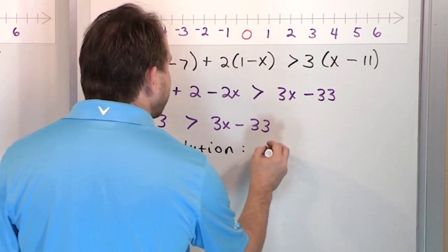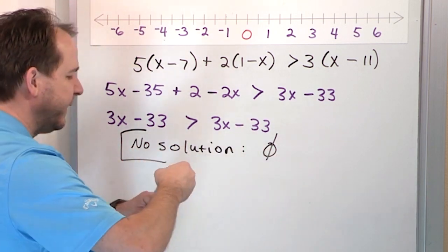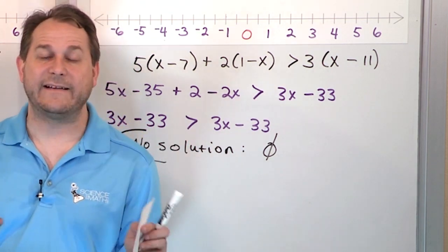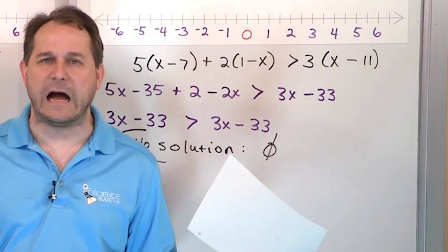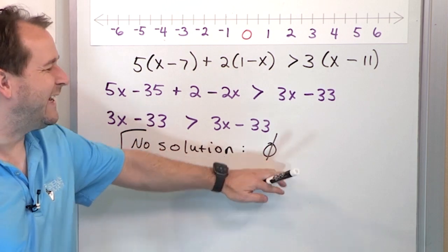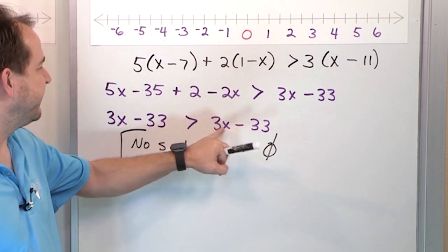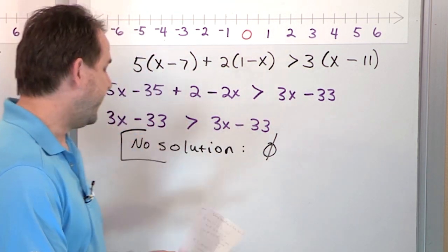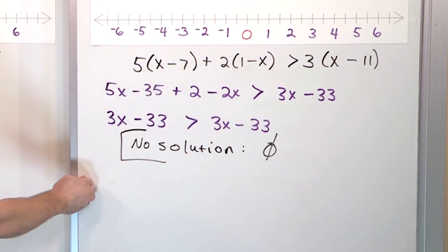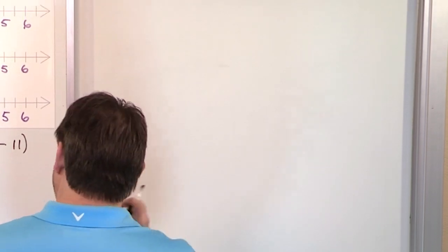Another way to write that is the empty set symbol — a zero with a slash through it — which means empty set. Normally when you solve inequalities, you get a set of numbers as the solution, like all numbers bigger than 5. Here we're saying there is no set of numbers that works, because it's impossible to put any value of x in and make the left-hand side bigger than the right. So you have to be on the lookout for that kind of weird solution and think about it logically.